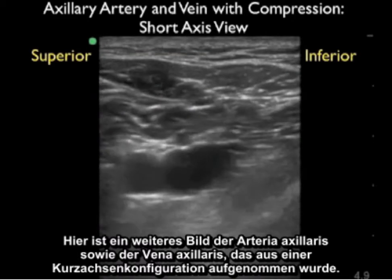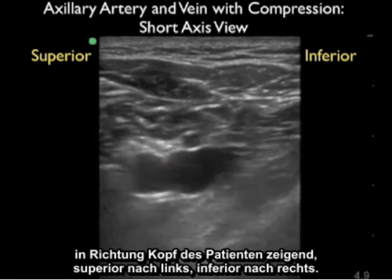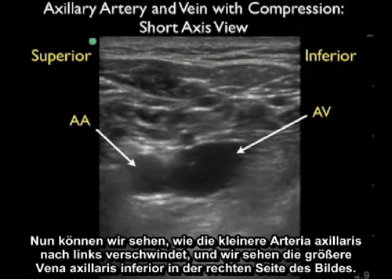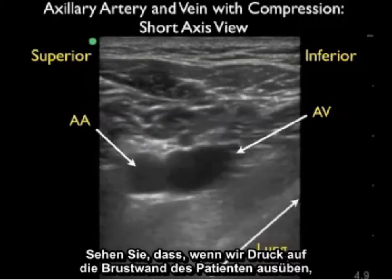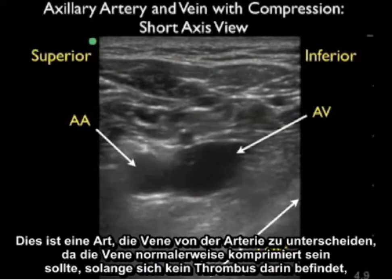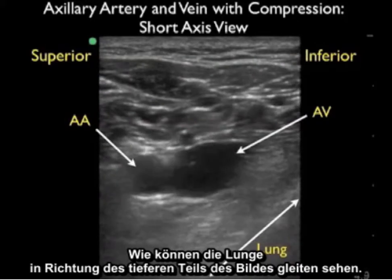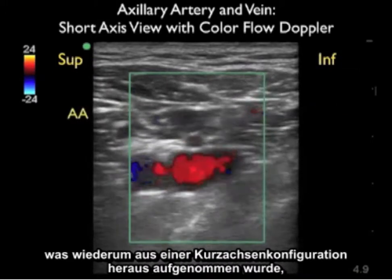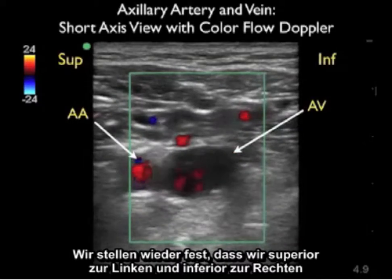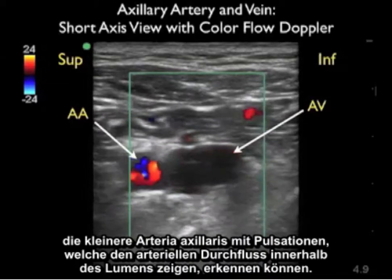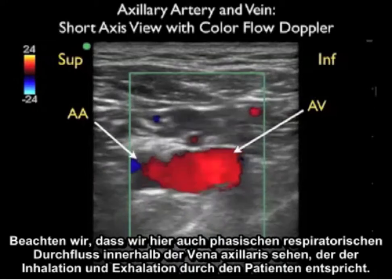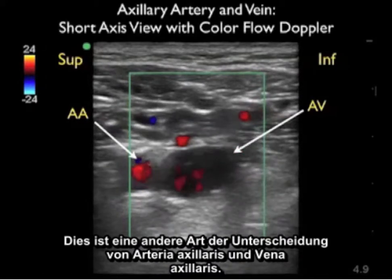Here's another short axis image with superior to the left and inferior to the right. The smaller axillary artery is seen superior and the larger axillary vein inferior. As probe pressure is applied to the chest wall, the axillary vein compresses — this differentiates vein from artery, as the vein compresses when no thrombus is present while the artery stays open. Lung sliding is visible in the deeper aspect of the image. Using Color Flow Doppler, we can further differentiate the vessels: the axillary artery shows constant arterial pulsations, while the axillary vein shows phasic respiratory variation of flow corresponding to inhalation and exhalation.